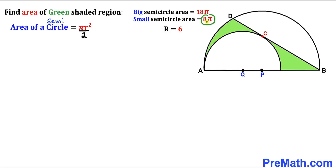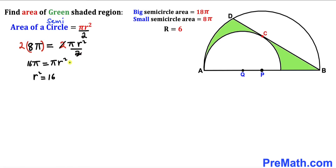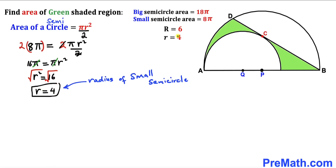Now focusing on the small semicircle whose area is 8π: 8π equals pi r squared divided by 2. Multiplying both sides by 2 gives 16π equals pi r squared. Pi cancels, so r squared equals 16. Taking the square root, r equals positive 4. Thus the radius of the smaller semicircle is 4.